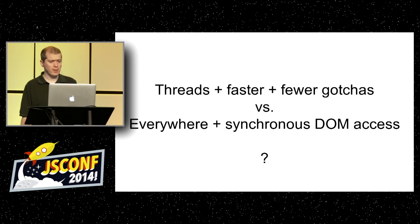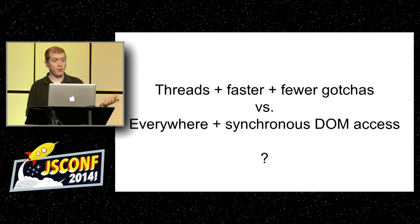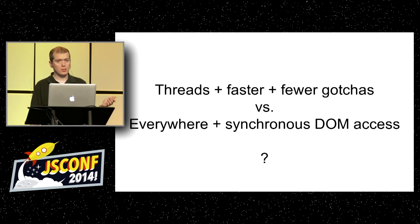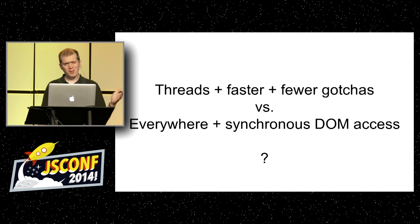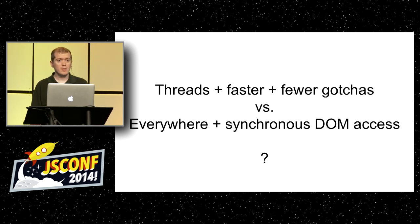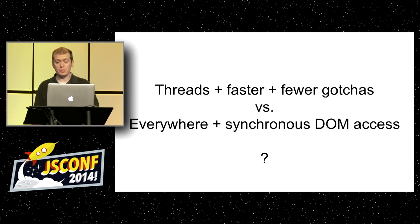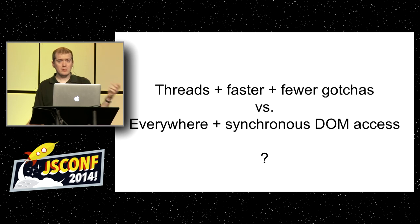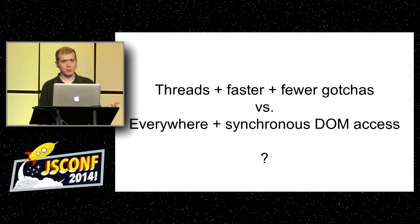This leaves you with a dilemma. You can go Portable Native Client — it has threads, it's a bit faster, it's closer to what we expect, fewer gotchas. But if you go the Emscripten approach, it runs everywhere JavaScript runs, and in many cases it's easier to synchronously access the DOM without asynchronous post messages. We have two not-yet-perfect solutions.